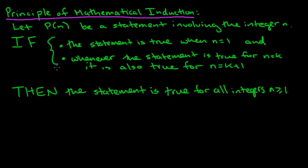If the following is true: if the statement is true when n equals 1, and also, whenever the statement is true for n equal to k, it must also be true for n equals k plus 1 — if those two things are satisfied, then you can conclude that the statement is true for all integers n bigger than or equal to 1.